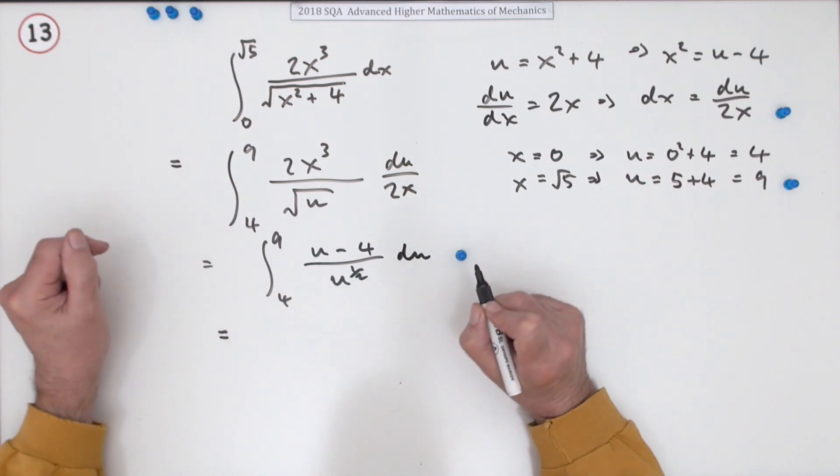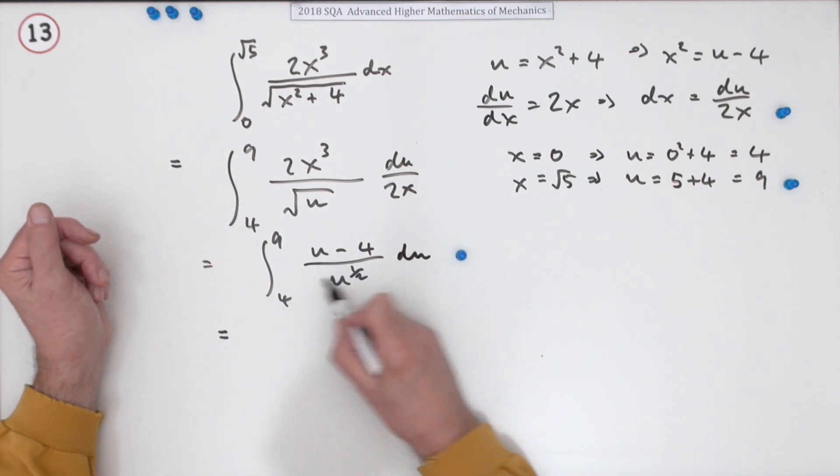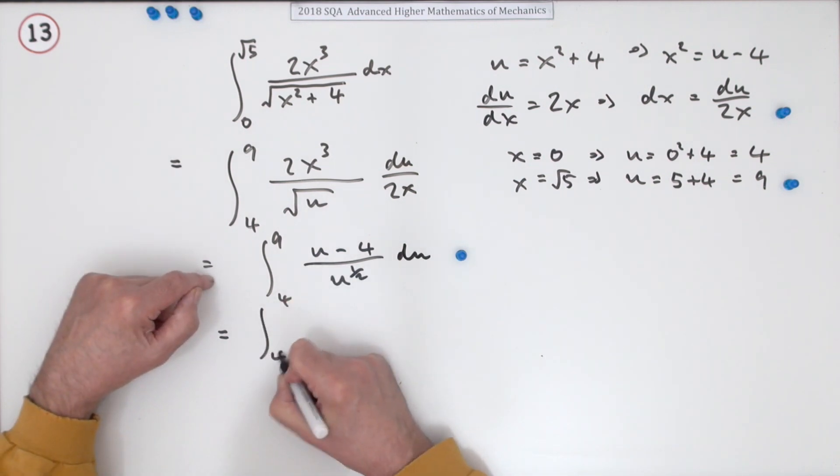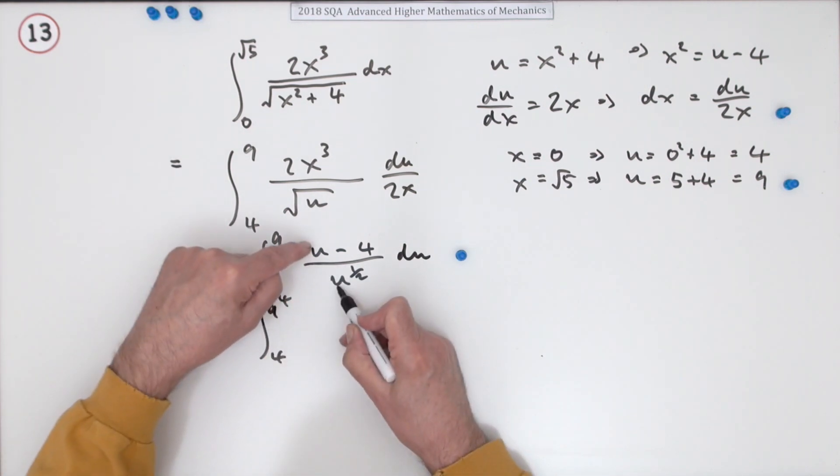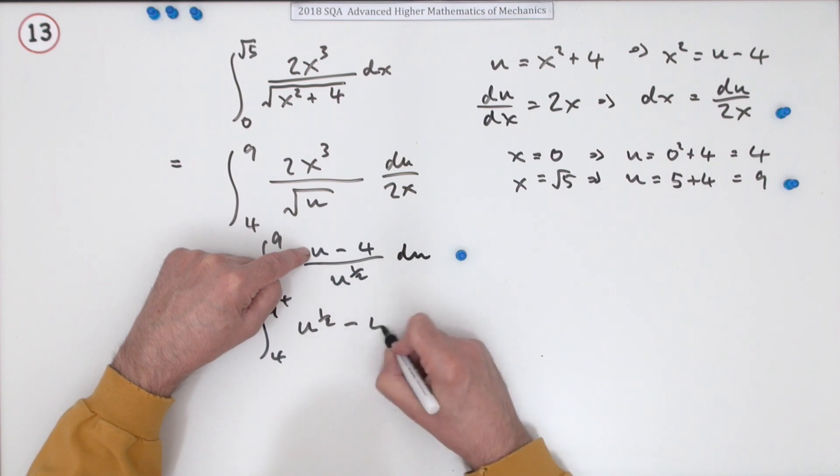The next mark is for tidying this up for integration, which is to separate them. So it's the integral from 4 to 9 of u^(1/2) minus 4u^(-1/2) du. There's another mark.